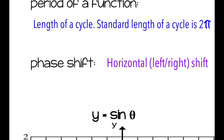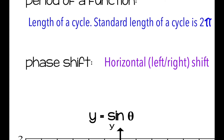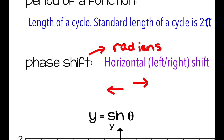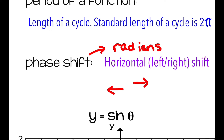The last concept before we get into graphing is the phase shift. That's something we already know about as a horizontal or left-right shift. If your graph is going right or left, that's a phase shift. A lot of times with sine and cosine functions, we deal in radians, so instead of saying shift right two units, a phase shift would be something like pi or pi halves.